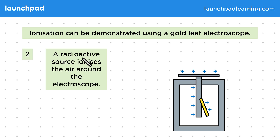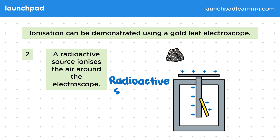A radioactive source ionises the air around the electroscope. We could use radium or plutonium, for example. The air around the source is ionised, as electrons are gained or lost due to radiation, so both positive and negative ions will be produced.